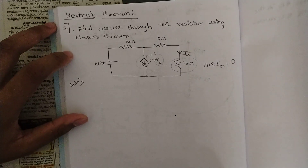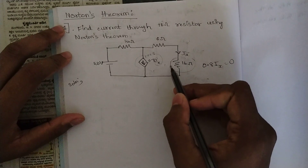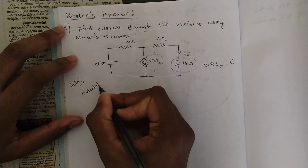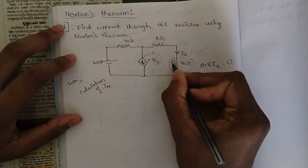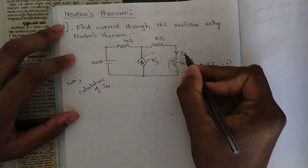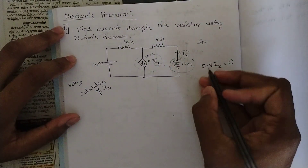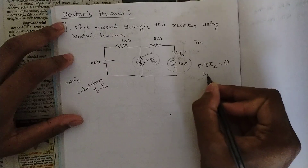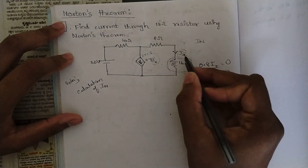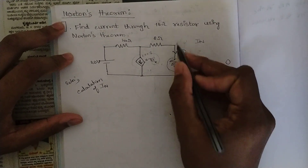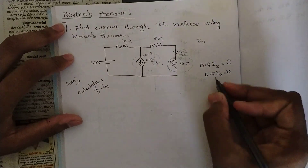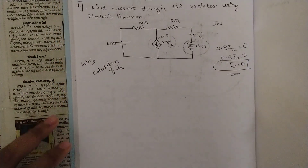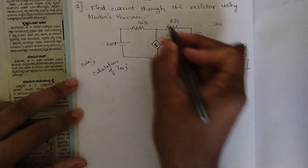In the first step — calculation of Norton current — we remove the load resistance (the 16-ohm resistor) and replace it with a short circuit. The current IX is then replaced by IN. Since there is no impedance in that short-circuited path, IX becomes zero. Therefore, 0.8 IX equals zero. This IX value will be used later when we solve for the equivalent impedance.